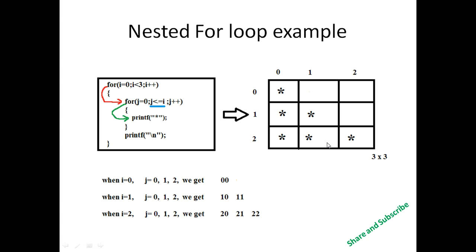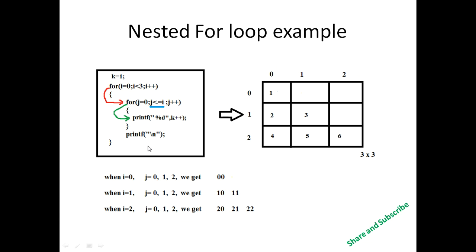Using the nested loop you can also print a star pattern — star, star, star, star — by simply writing a print star statement inside the inner loop. All other code segments remain the same.